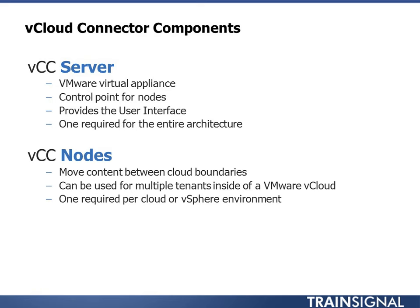When connecting multiple clouds and migrating a workload, the workload goes to the local node, which then talks to the destination node to transfer it. The workload needs to be powered off — you can't migrate a powered-on VM. If there's an interruption during transfer, the node will remember where the transfer was and pause. When the connection is restored — maybe a WAN link went down — the node notices the destination is back online and continues the transfer. This gives you resiliency as well as a staging area to migrate workloads between clouds.